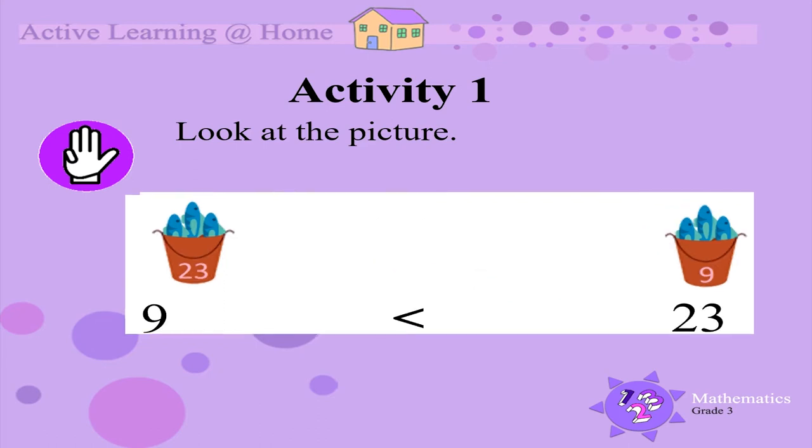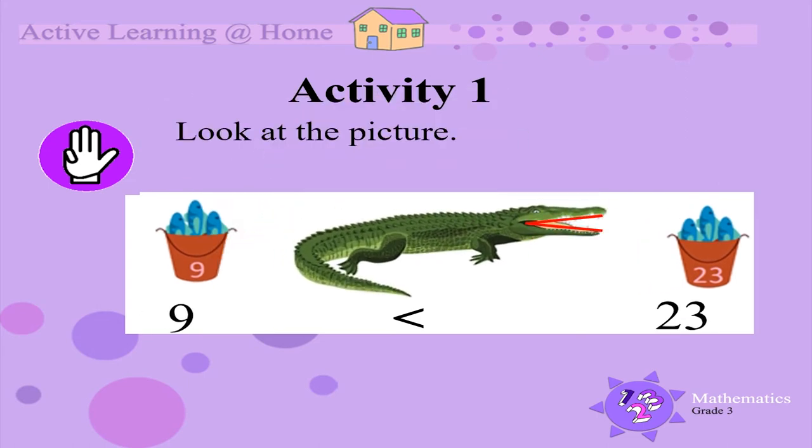The number 23 is bigger than the number nine. We could also say that nine is less than 23. The sign that looks like a crocodile's open mouth faces 23 because the number 23 is bigger than the number nine.